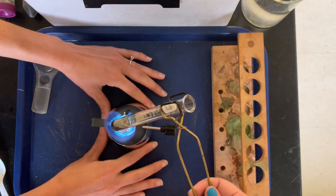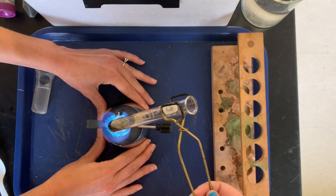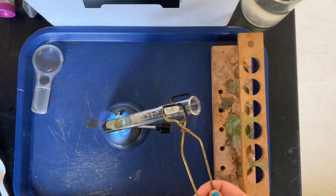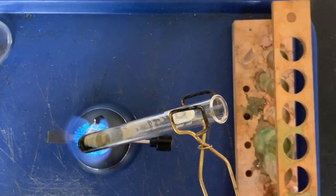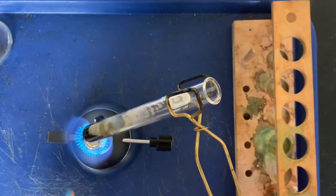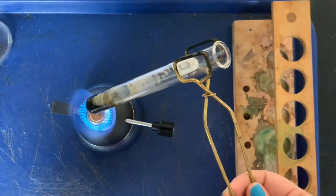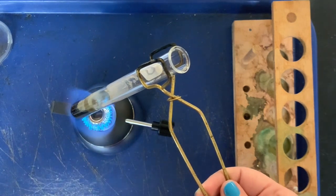You can already see, though, you can already see it turning black. We could maybe zoom in on the camera. Yeah, can y'all see that, there at the bottom of the test tube? It's changing color.